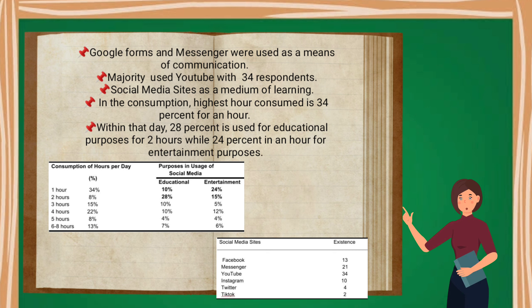In the consumption of hours per day, the highest hour consumed is 34% for an hour. Within that day, 28% is used for educational purposes for two hours, while 24% in an hour for entertainment purposes.